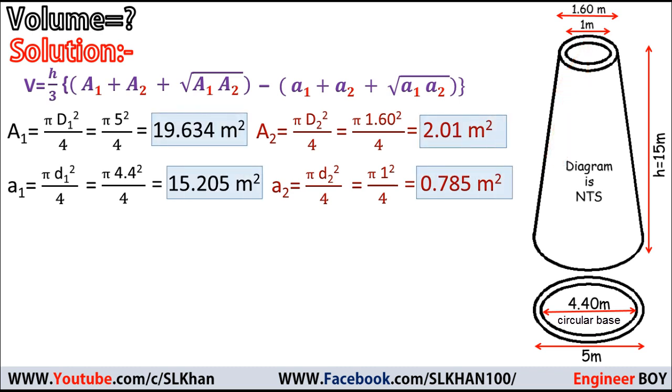So we have all the areas, and there's nothing left. We just need to put all these values in the formula for volume determination. So V = (15/3) times [19.634 + 2.01 + √(19.634 × 2.01)], and these are the same values for the calculation.